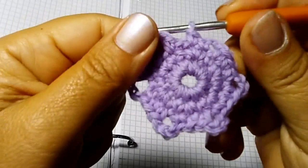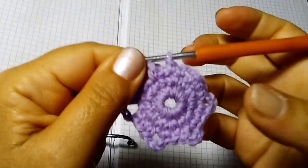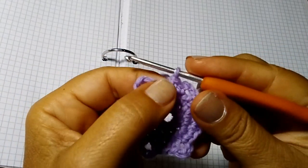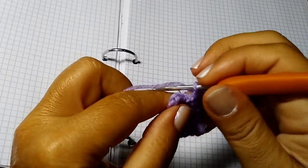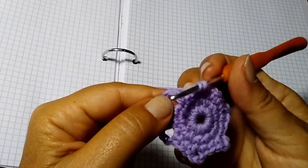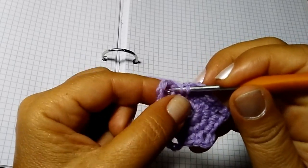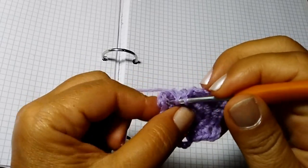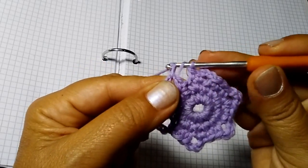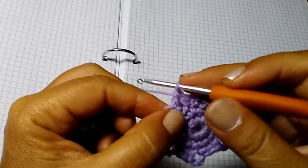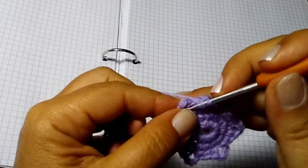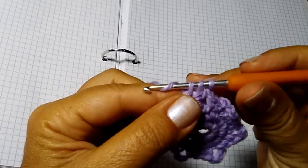Allora abbiamo finito il nostro giro precedente con questa maglia bassa. Direttamente da qui iniziamo il nuovo giro caricando il filo, entrando nel primo spazio, questo occhiello di 3 catenelle, e facendo 9 maglie alte. Iniziamo con la prima, seconda.